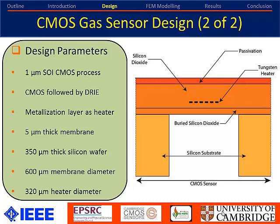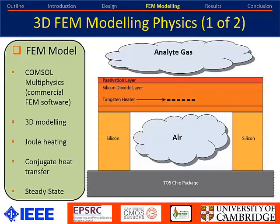To design this sensor it's very important to first do detailed FEM modeling — you don't want to do a silicon spin-off and then realize something is wrong. We use commercial COMSOL Multiphysics software for 3D FEM modeling at the actual chip size. This shows the chip in cross-section placed on a TO-5 chip package. There is air in the cavity because when we package the chip in-house, air is the atmosphere used. The analyte gas sits on top when we sense it. We couple Joule heating with conjugate heat transfer physics to analyze the steady-state response.